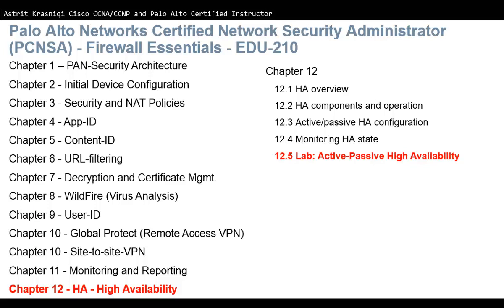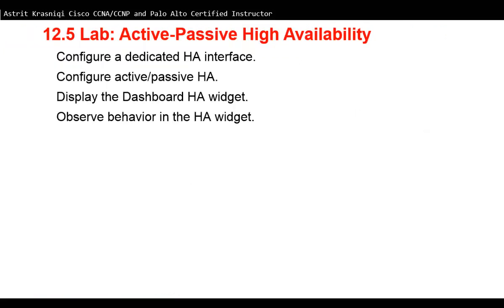In this video we are covering PCNSA 210 and this is Chapter 12: High Availability, or HA for short. This is the fifth video of Chapter 12 — 12.5 — our lab about active-passive high availability configuration. We're going to configure a dedicated high availability interface used as a data link, configure active-passive HA, add a dashboard widget, and observe the high availability behavior.